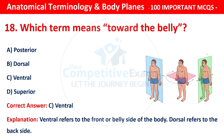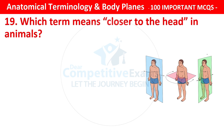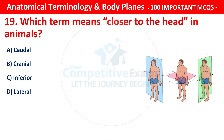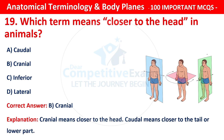Question number 19: Which term means closer to the head in animals? Options are: caudal, cranial, inferior, or lateral. The correct answer is B — that is cranial. Cranial means closer to the head. Caudal means closer to the tail or lower part.